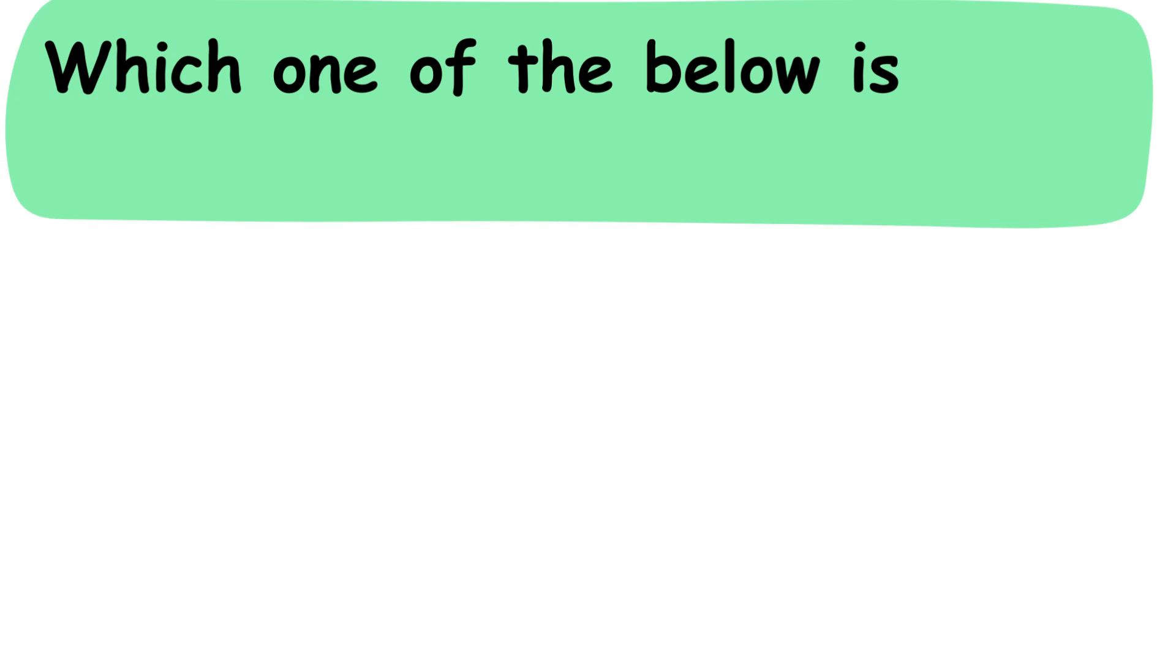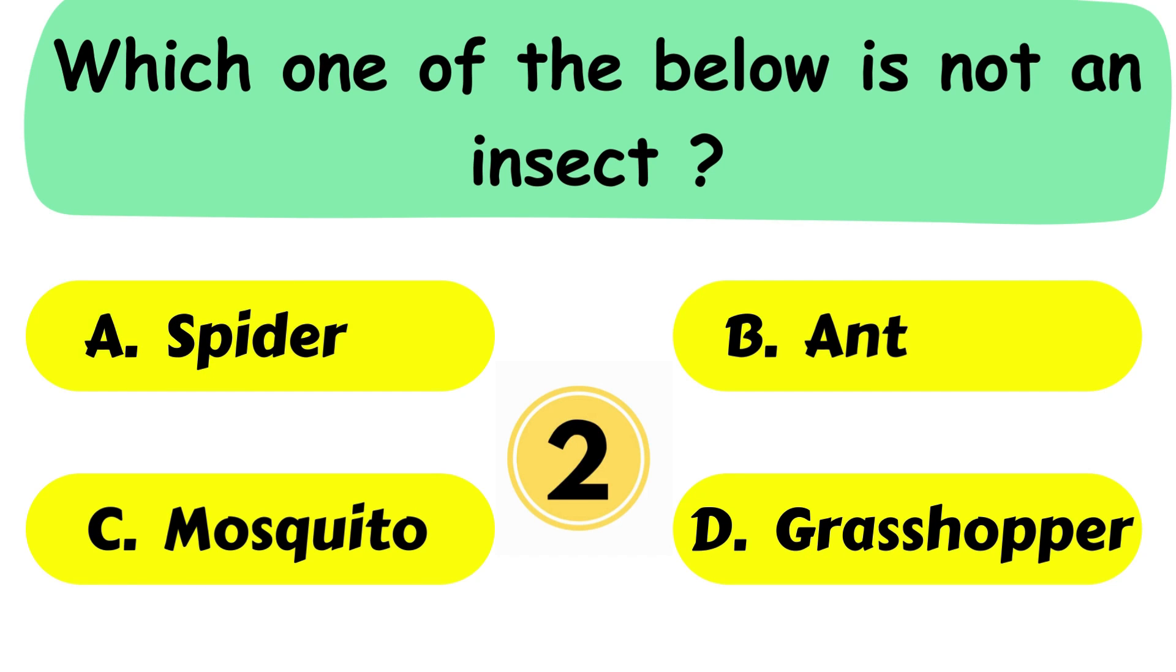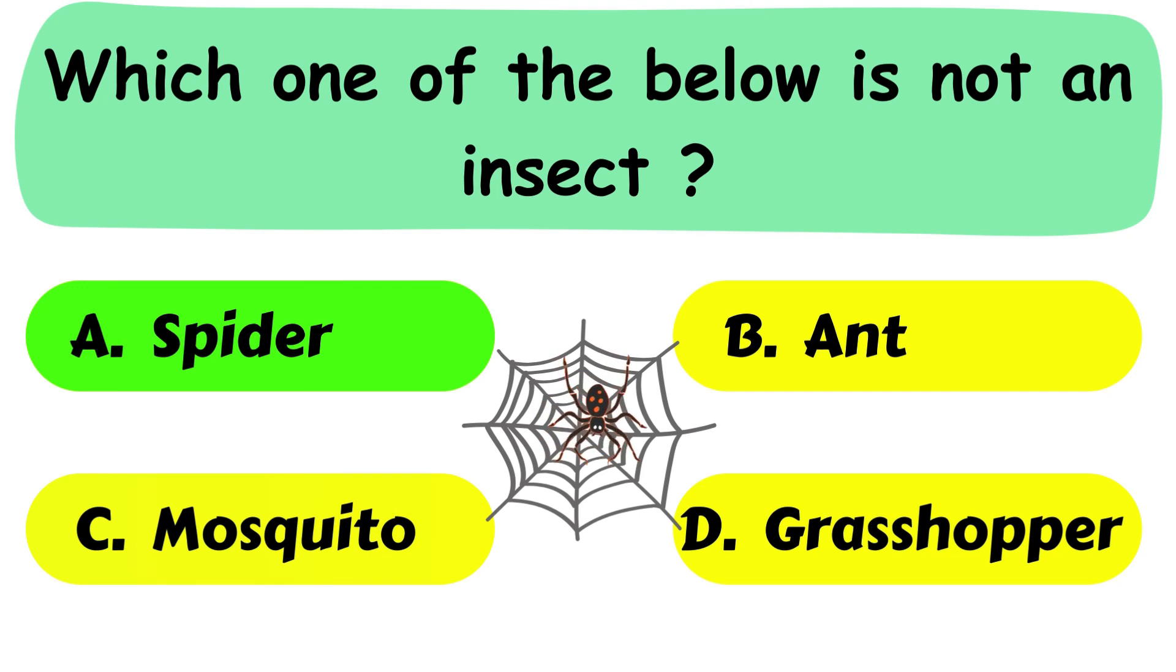Question. Which one of the below is not an insect? A. Spider. B. Ant. C. Mosquito or D. Grasshopper. The correct answer is option A. Spider.